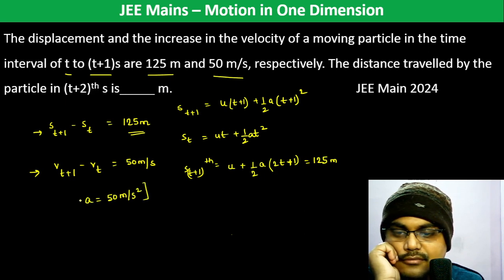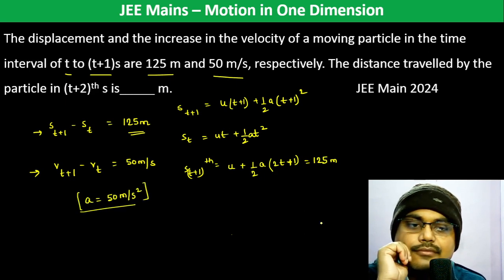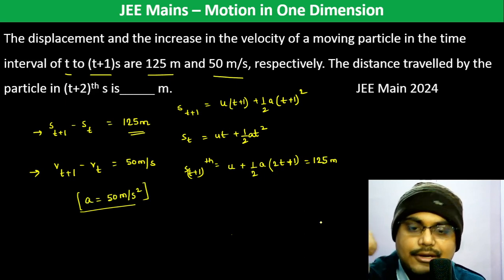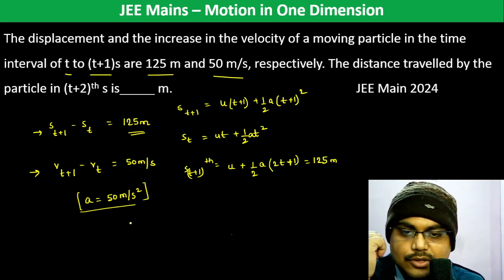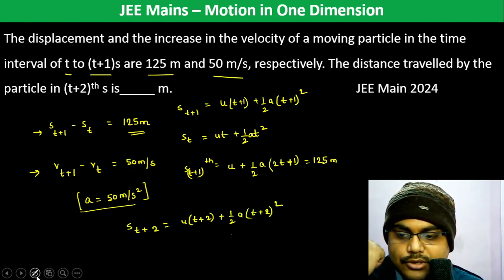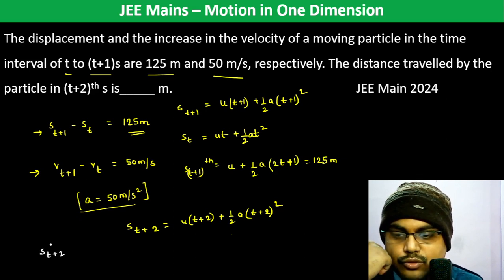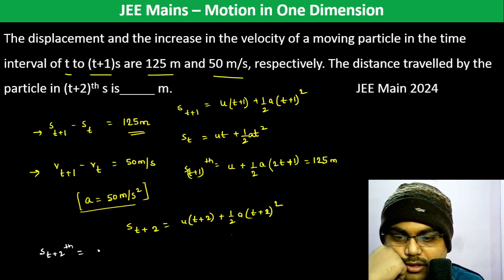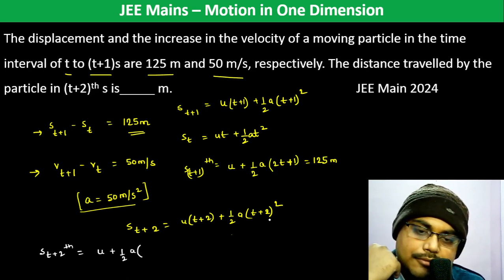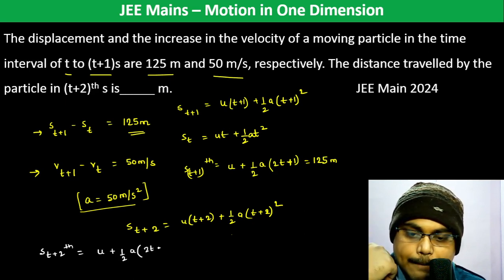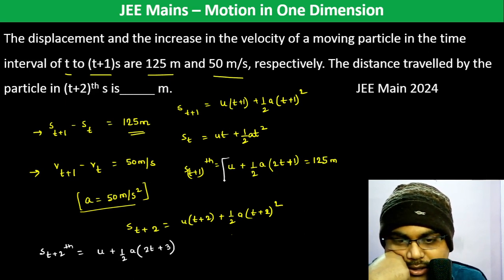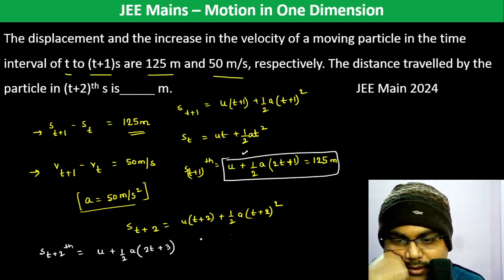Now for distance traveled by the particle in the (t+2)th second: S_{t+2} = u(t+2) + 1/2 a(t+2)². Therefore S_{t+2} in the (t+2)th second becomes u + 1/2 a into... this gives 2t plus 3.